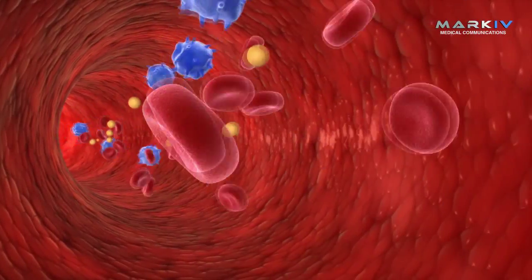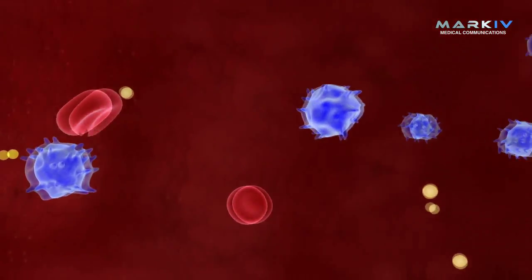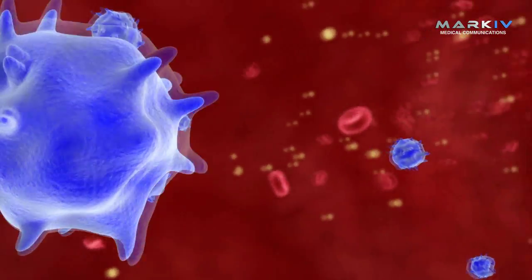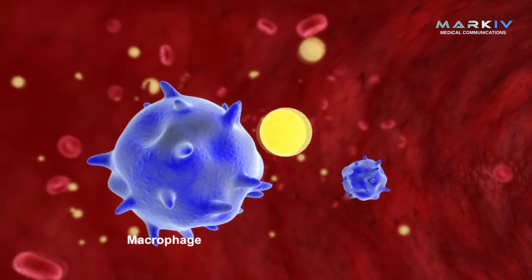In the bloodstream, these are selectively taken up by the reticuloendothelial system. Macrophages engulf the liposomes through the process of endocytosis.